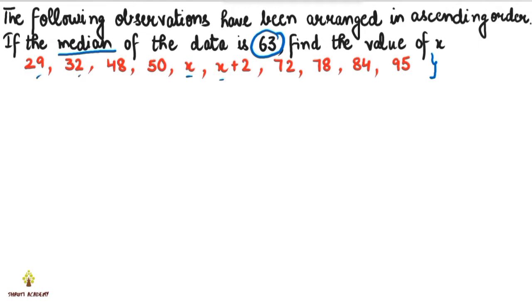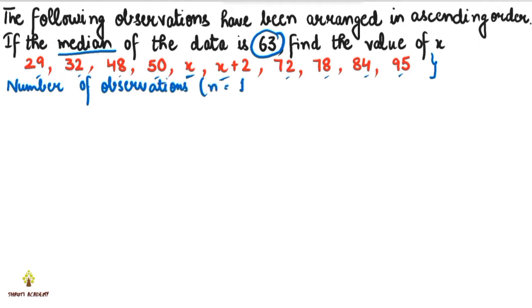Let's count: 1, 2, 3, 4, 5, 6, 7, 8, 9, and 10. So we have 10 number of observations.